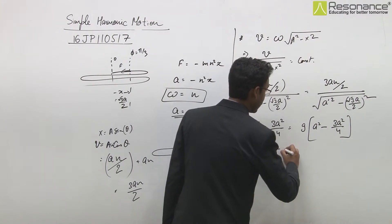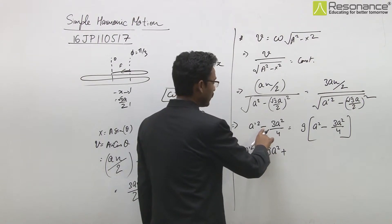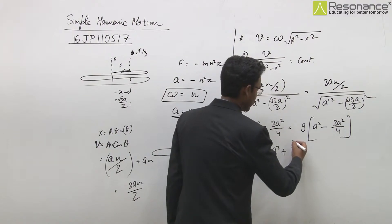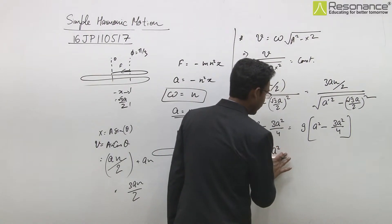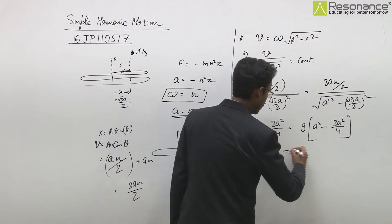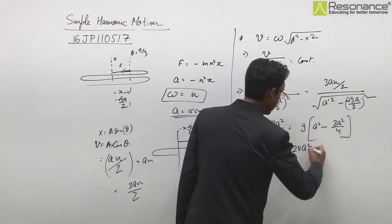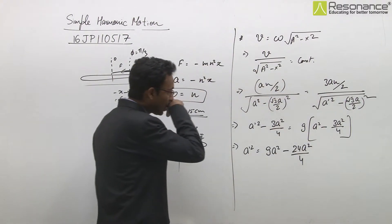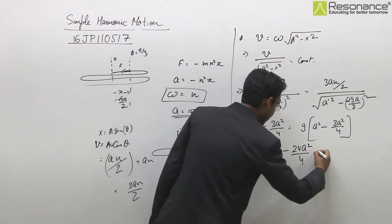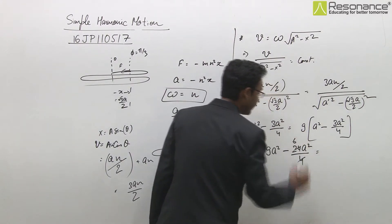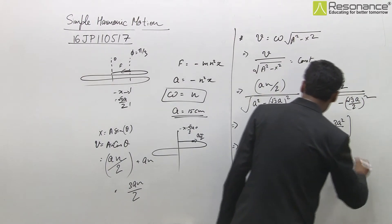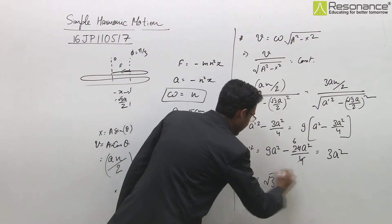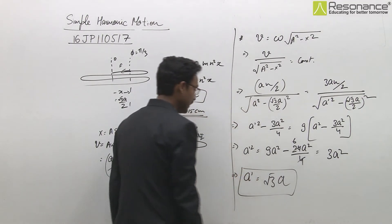This gives a'² = 12a²/4 = 3a², so a' = √3a, and this will be the answer here.